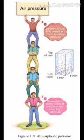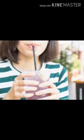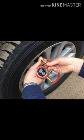As you move higher, this air pressure becomes lesser and lesser. You must have used vacuum suction hooks, or drunk water with the help of a straw, or checked the pressure of air in your tires. These are all examples of air pressure in our daily life.